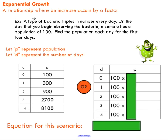Okay, so exponential growth is a relationship where there's an increase by a factor. In this example, we've got a type of bacteria that triples in number every day. So we're increasing by a factor of three every day.